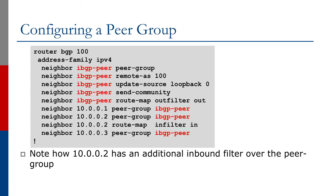Looking at the slide, the configuration is quite simple. We set up the Peer Group, give it a nice descriptive name, and then put all the configuration as a member of that Peer Group. For internal BGP that can even include the AS number. We include things like the update source being the loopback interface as we learned earlier, sending community to our IBGP neighbors, and any other outbound policy. Then we take this Peer Group and apply it to the neighbors that share the same outbound policy.